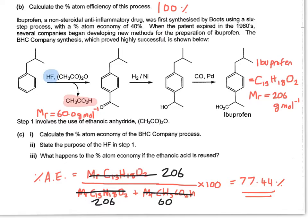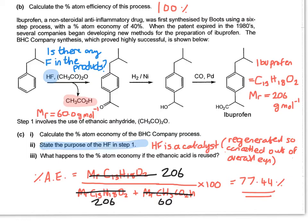So we now look at the hydrogen fluoride. We're going to ask you to state the purpose of the HF in step one. You need to think really carefully here. Does HF appear anywhere or does fluorine appear anywhere on the right-hand side? So looking carefully at it, you can see clearly that there isn't. So what this must mean is that hydrogen fluoride is a catalyst. It's regenerated so it's cancelled out of the overall equation.